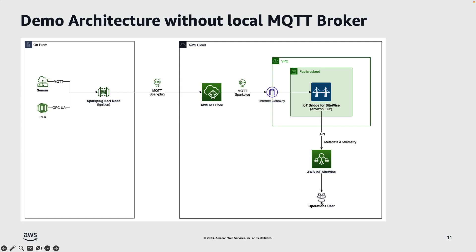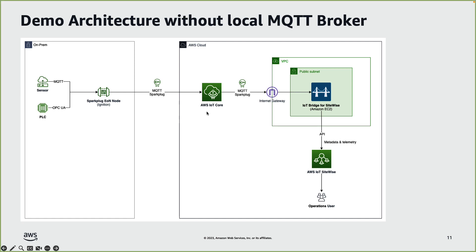Finally, an operations user can access the dashboards available in IoT SiteWise and gain insights into their operations. In this architecture pattern, we have the edge-of-network node directly talking to the cloud MQTT broker. But typically in large manufacturing facilities, a local MQTT broker is used between the edge-of-network node and the cloud MQTT broker, to reduce latency and avoid dependency on cloud connectivity for critical operations.